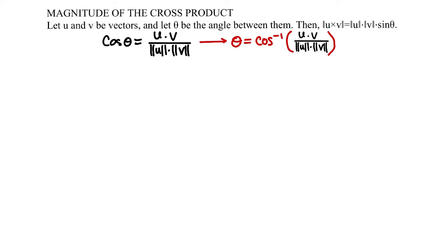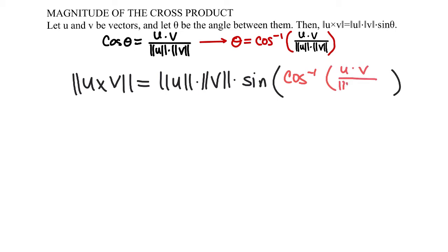What we can do is take the magnitude of the cross product of u and v and let that equal ||u|| ||v|| times the sine. Instead of theta, I'm going to substitute in this inverse cosine.